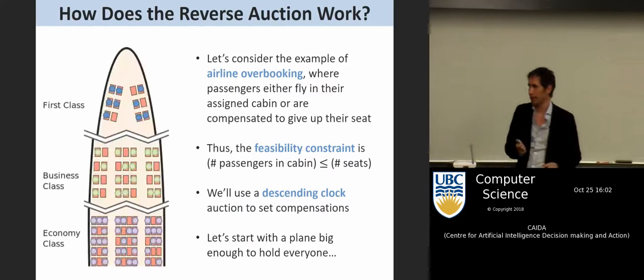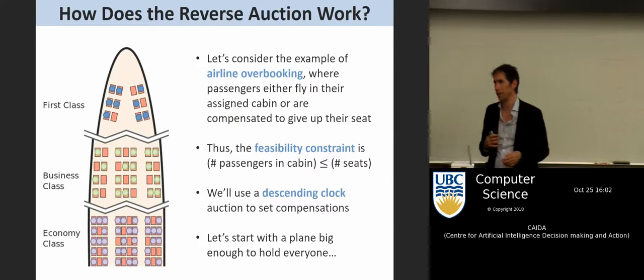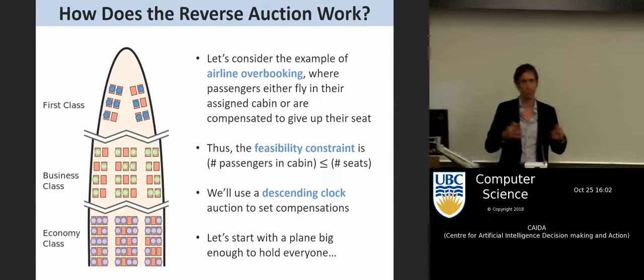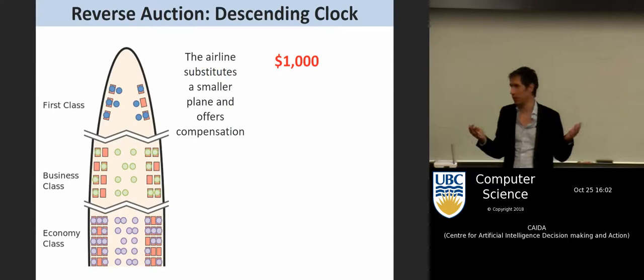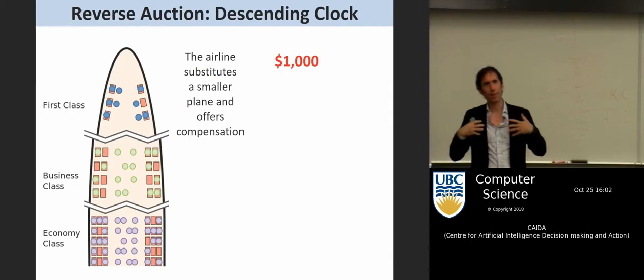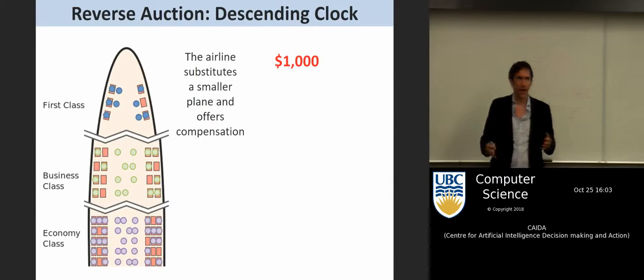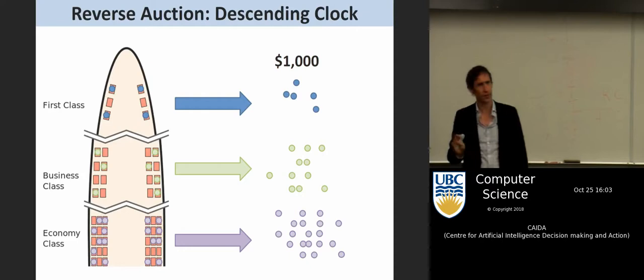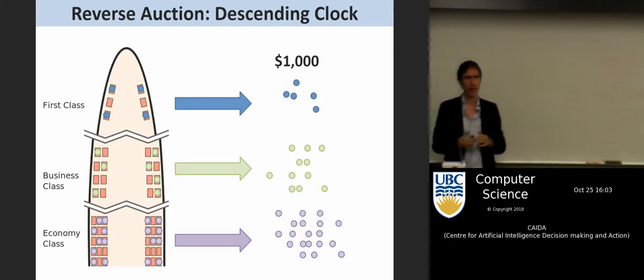A plane has first class, business class, and economy class, everyone assigned to seats. Then United Airlines says: we have all these empty seats, let's swap to a smaller plane. Now we've got more people than seats — infeasible. So they offer everyone something to not fly: the first flight tomorrow plus $1,000. Some people say no under any circumstances; others say $1,000 sounds good. They get off the plane and we've met the feasibility constraint. This is where the auction begins. Now United Airlines says: actually, how do you feel about $800? Some curse them and get back on the plane; others accept $800.